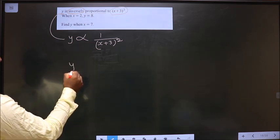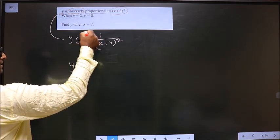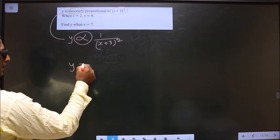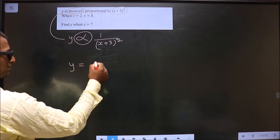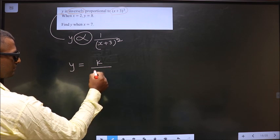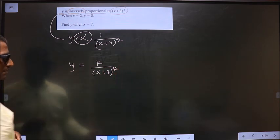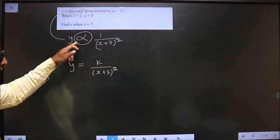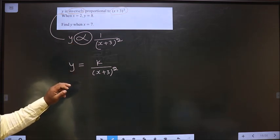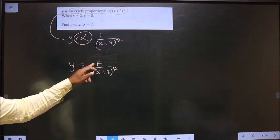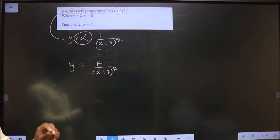Now, to replace this proportionality symbol with equal to, we should put a constant k. Whenever we are replacing proportionality symbol with equal to, we should put a constant k. It is a rule.